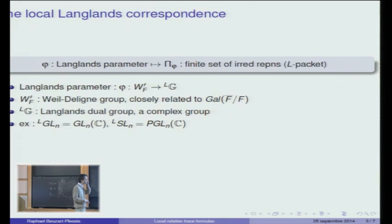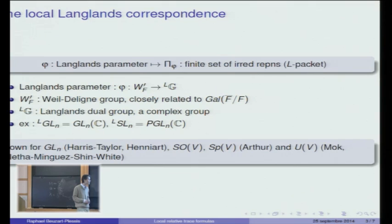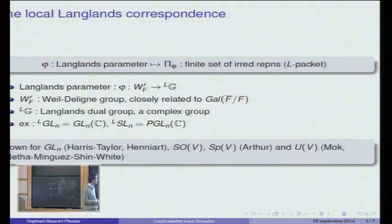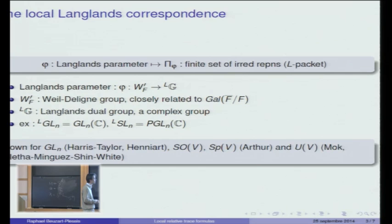First, by the work of Harris-Taylor and Henniart, it is now known for GLN. Then recently Arthur succeeded in extending the correspondence to special orthogonal and symplectic groups. And even more recently, a number of people extended the correspondence to unitary groups. So now that we know the local Langlands correspondence for these groups, we have a way to talk about the irreducible representations of G, and we may return to our initial problem.